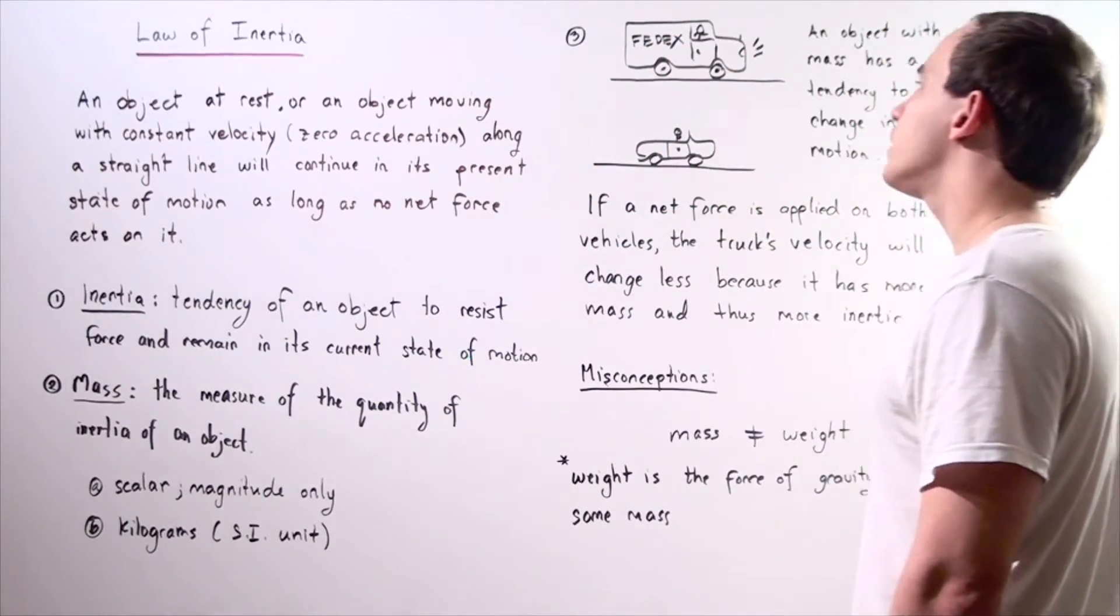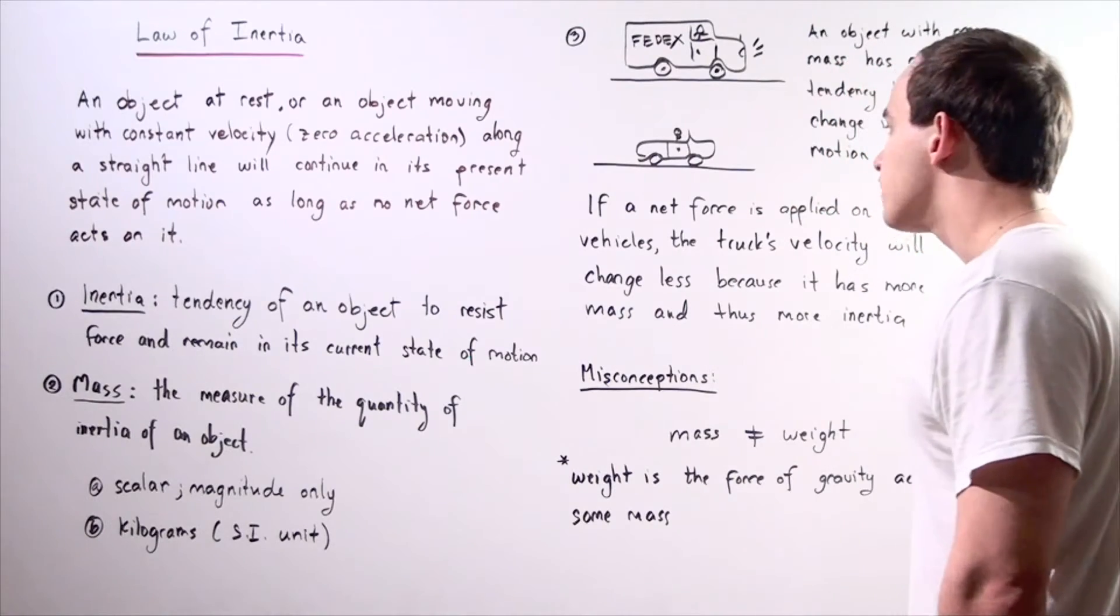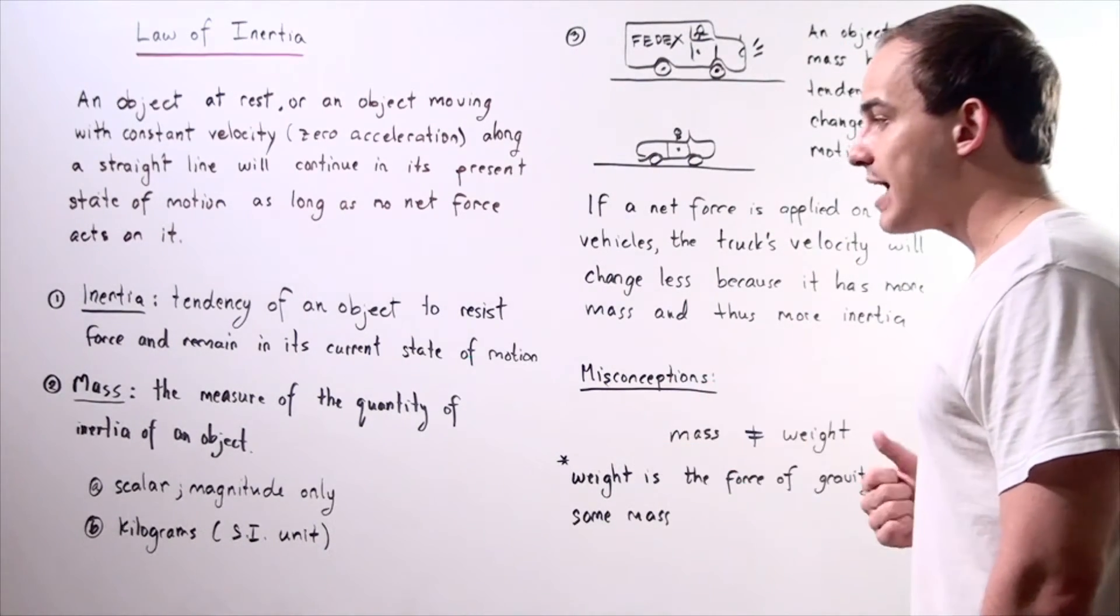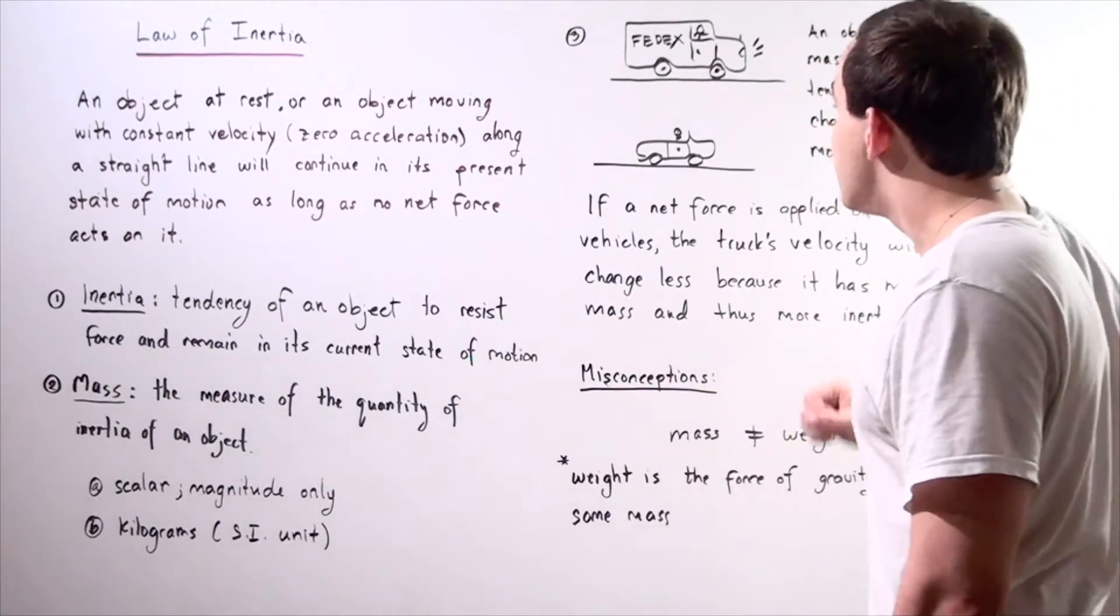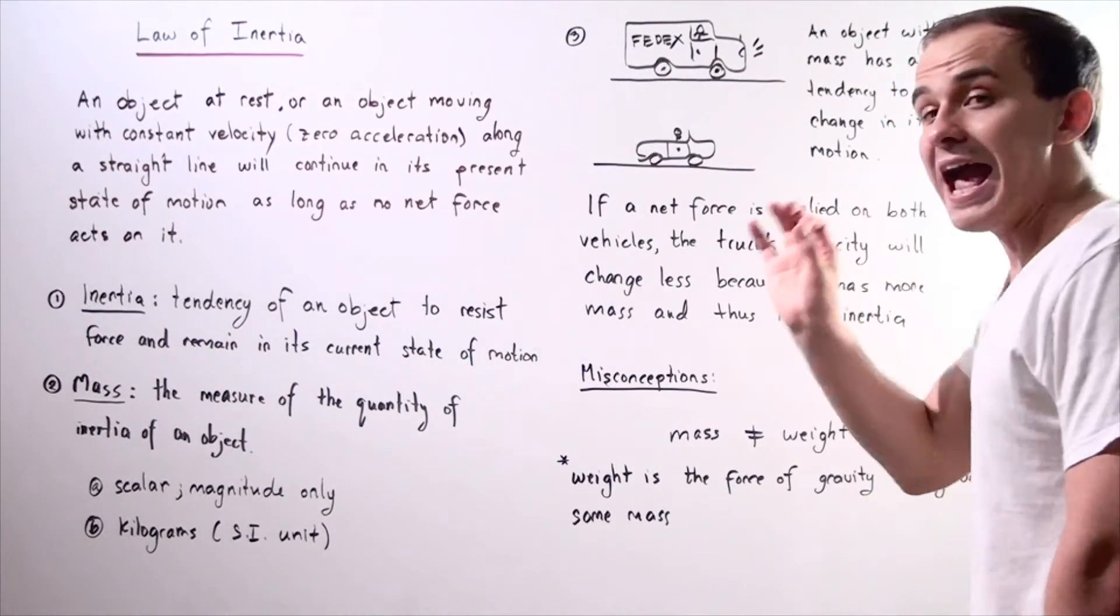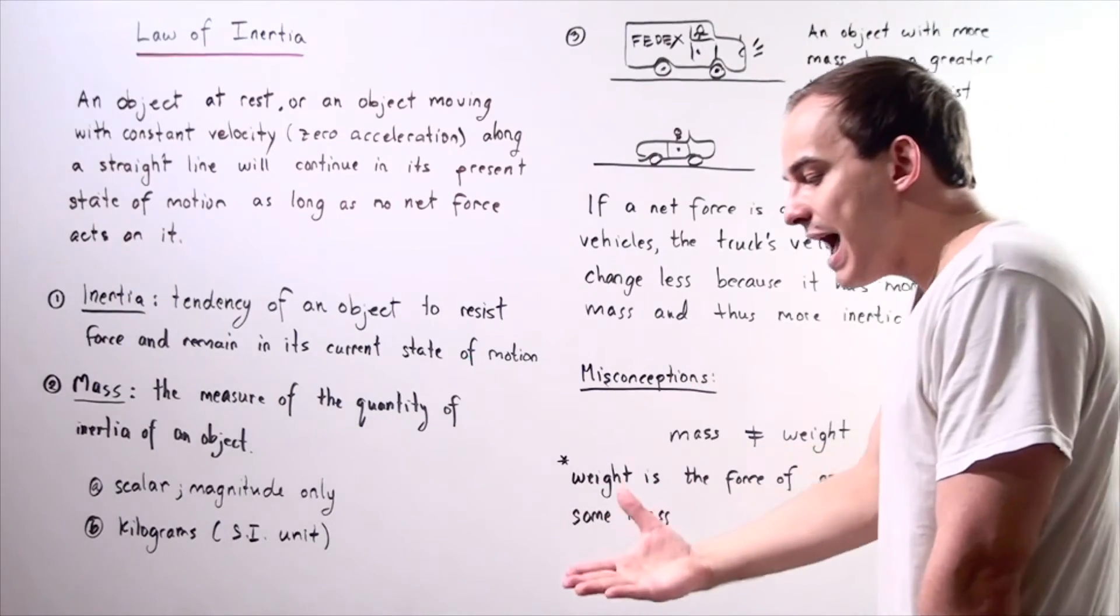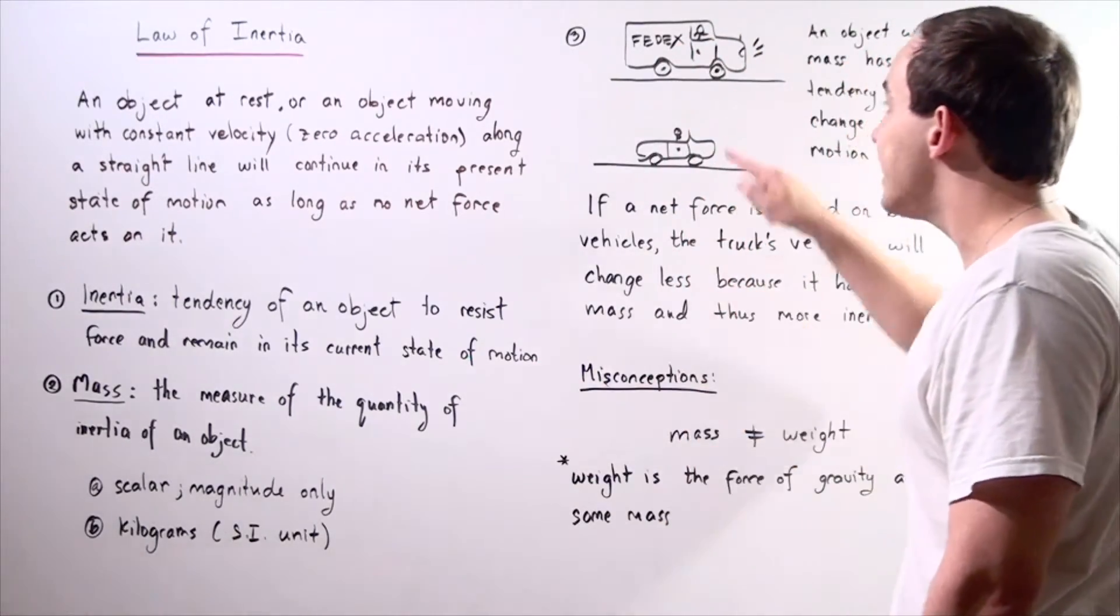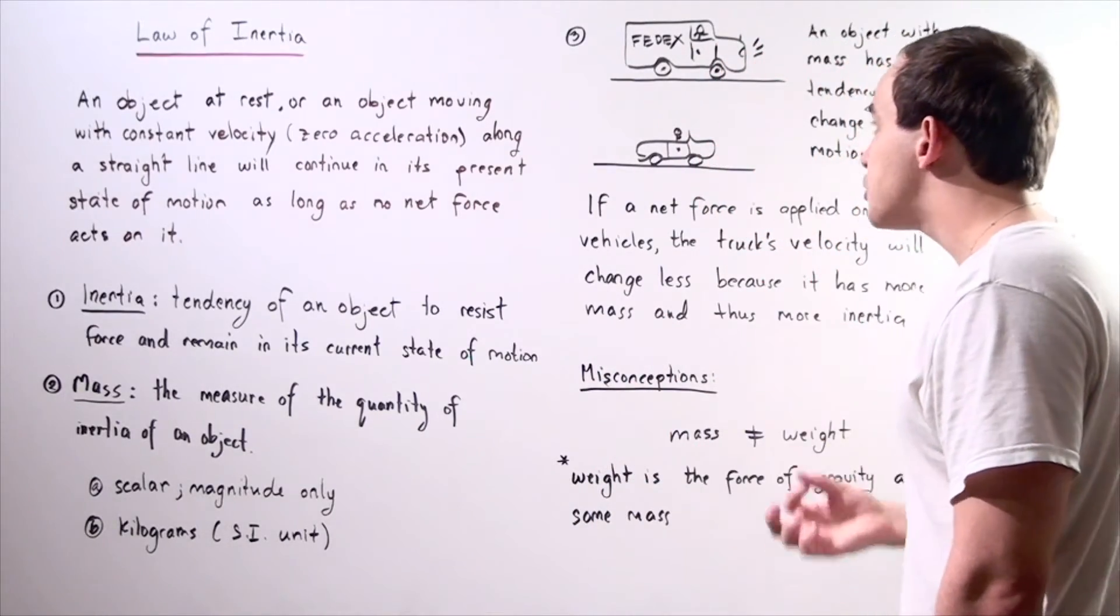Let's suppose we have a truck and we have a car. Which one of these objects has greater mass? Clearly, the truck has greater mass than the smaller object, the car. Because this truck has greater mass, it has greater inertia, and therefore, it has a greater ability to resist change in motion.